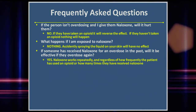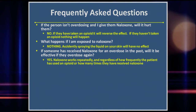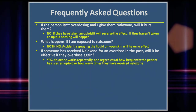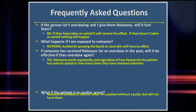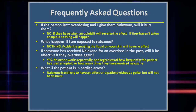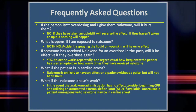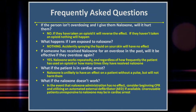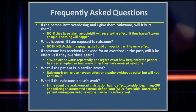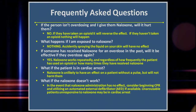What happens if I am exposed to naloxone? Nothing. Accidentally spraying the liquid on your skin will have no effect. If someone has received naloxone for an overdose in the past, will it be effective if they overdose again? Yes. Naloxone works repeatedly and regardless of how frequently the patient has used an opioid or how many times they have received naloxone. What if the patient is in cardiac arrest? Naloxone is unlikely to have an effect on a patient without a pulse, but it will not harm them. What if naloxone does not work? In the event that naloxone administration has no effect, consider beginning CPR and utilizing an automated external defibrillator if available. Unarousable individuals unresponsive to naloxone may be in cardiac arrest.